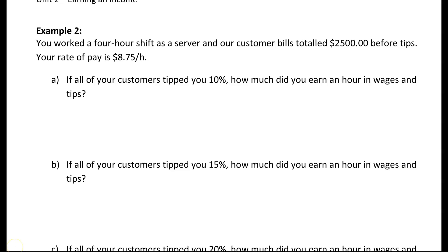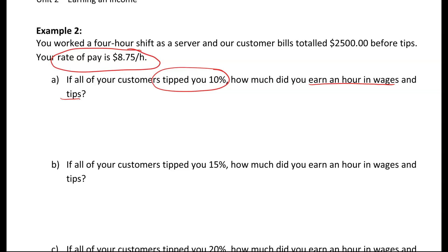For example two, you work a 4-hour shift as a server and your customer bills total $2,500 before tips. Your rate of pay is $8.75 an hour. If all of your customers tipped you 10%, how much did you earn per hour in wages and in tips? So we're looking at how much you earned in wages and tips in total. You were tipped 10%, your rate of pay is $8.75 an hour, and the total of the customer bills was $2,500 before tips.